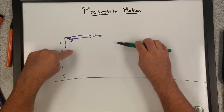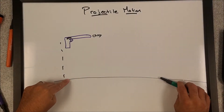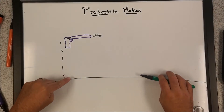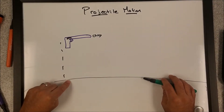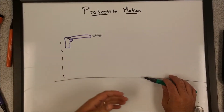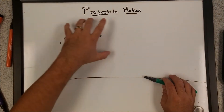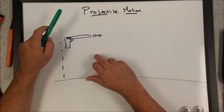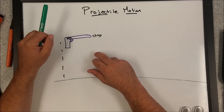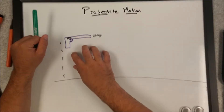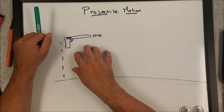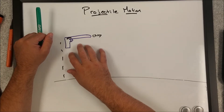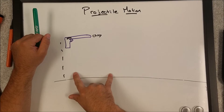They will indeed both hit the ground at the same time. I know it doesn't seem very obvious, and you've probably never actually shot a gun and paid attention to when the bullet and the shell hit. I'm going to try to mathematically show you why in a minute, but they will hit at the same time.